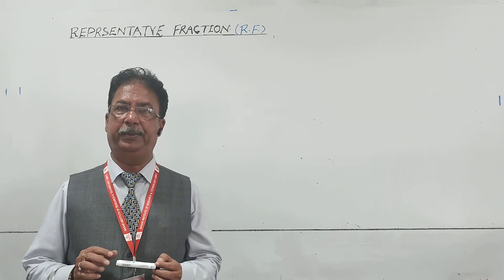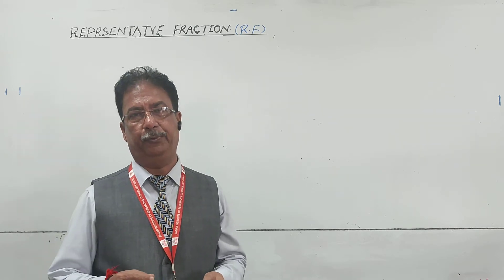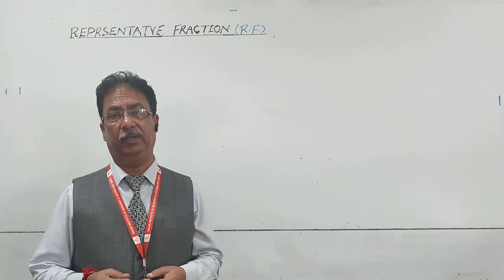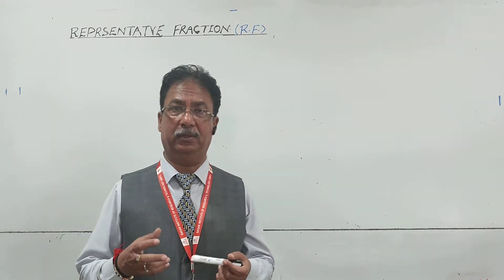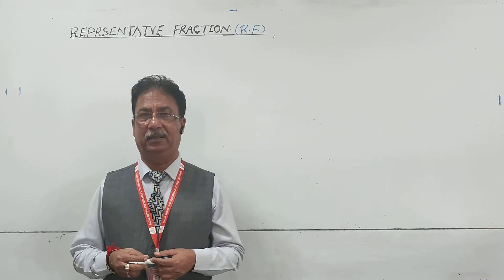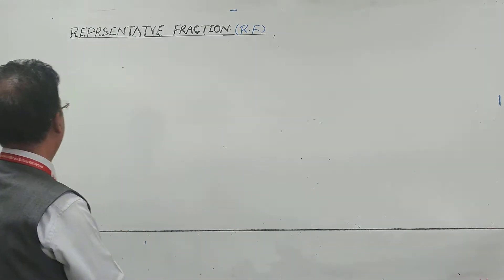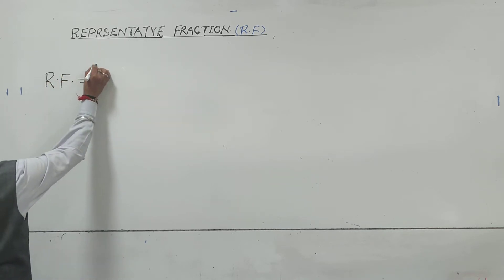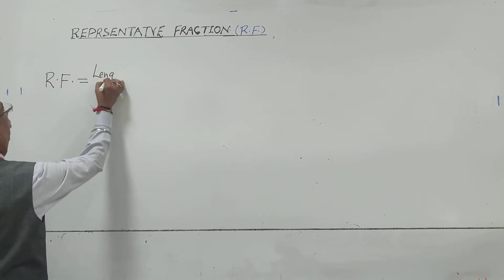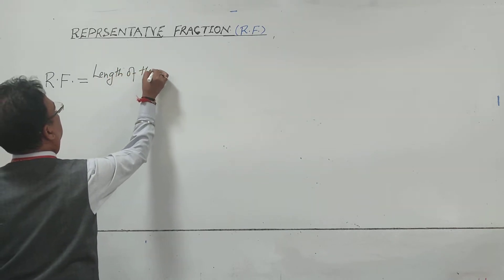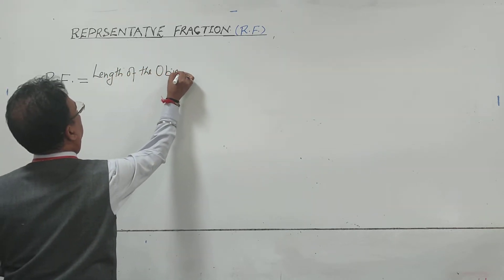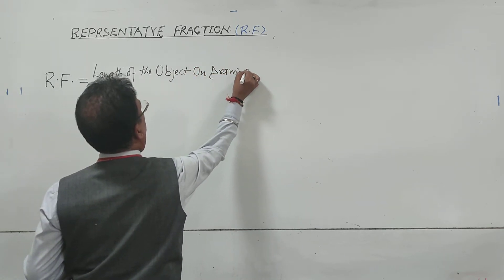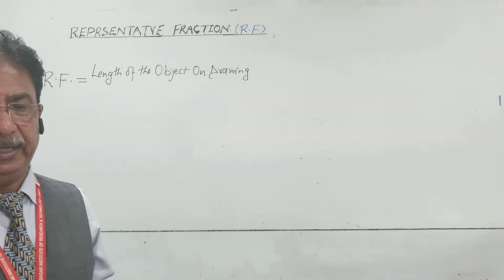Without RF there will be no scale. Even the scale you have been using from school age has RF one is to one. Why one is to one? Because the length on that scale is the same as the actual length. If you remember the formula for RF, that is representative fraction, this RF will be equal to the length of the object on the drawing divided by the actual length.